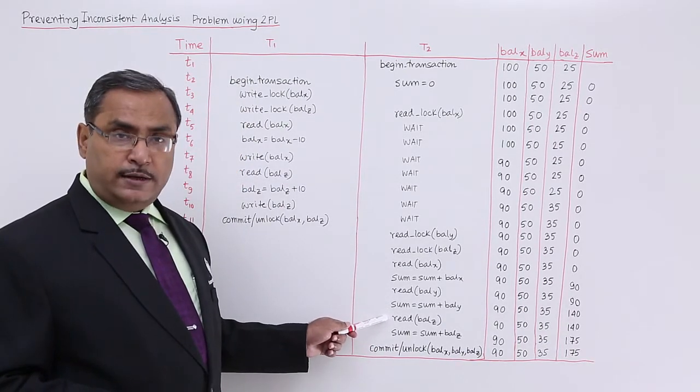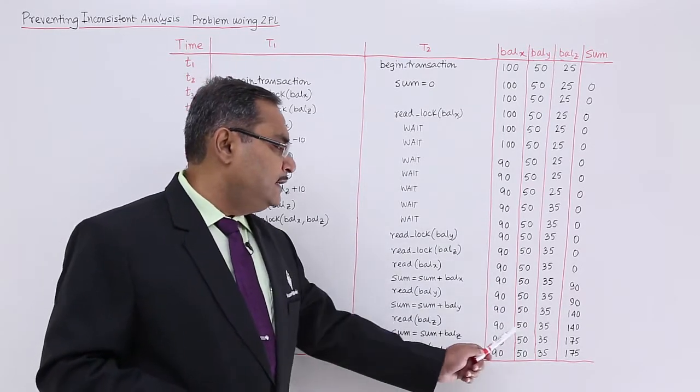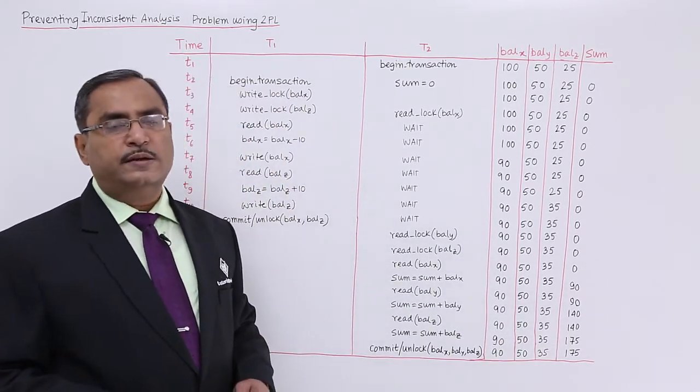Read balance Z. Balance Z current value is 35. Sum is equal to sum plus balance Z. Now the sum has become 175.